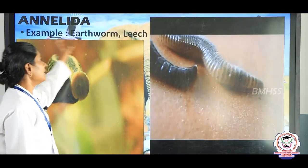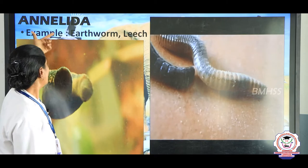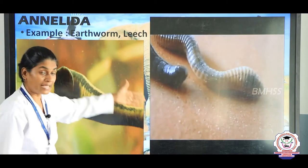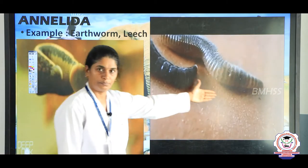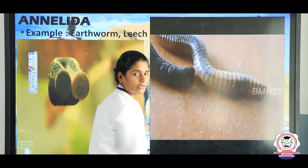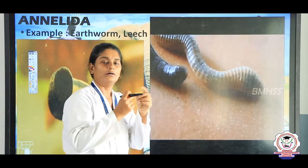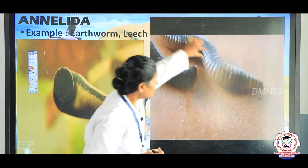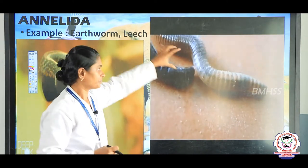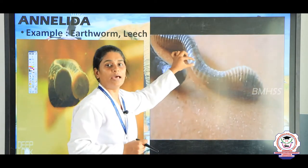The fifth phylum is Annelida. 'Anna' refers to segments and 'lida' means form. Examples of Annelida are earthworm and leech. You can see lines on the earthworm — Annelida are segmented animals, composed of rings. Their body is very soft. Locomotion is through lateral appendages in the form of setae or parapodia.